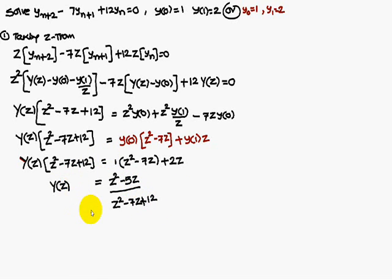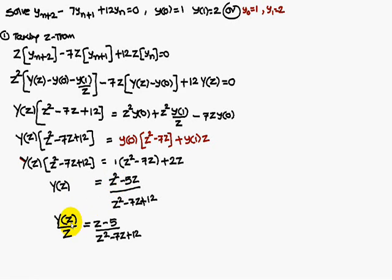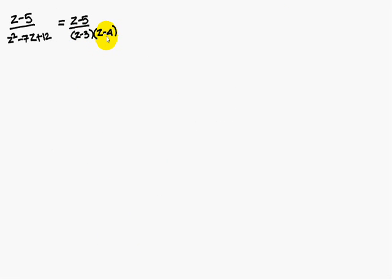Now this problem is solved using partial fractions. Write Y(Z)/Z. Taking Z as common from the numerator gives (Z minus 5) over (Z² minus 7Z plus 12). Now factorize the denominator: multiplication gives 12 and addition gives 7, meaning factors are minus 4 and minus 3, so (Z minus 3)(Z minus 4). Write this as A/(Z minus 3) plus B/(Z minus 4).